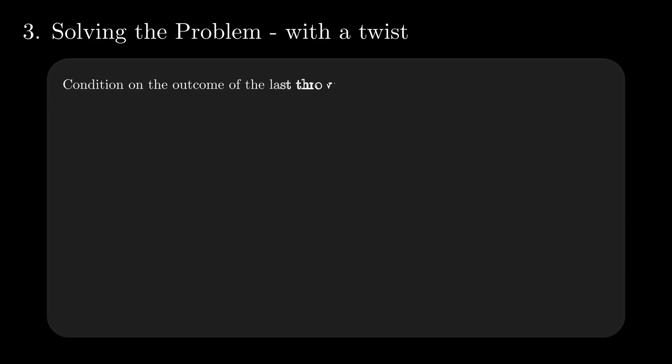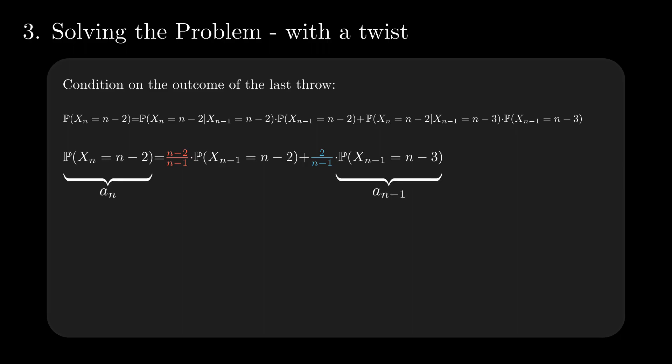Let us condition on the outcome of the last toss and generalize the computations for n tosses and n-2 successes. As before, the first conditional probability requires a miss in the last toss with probability (n-2)/(n-1), and the second one to be a hit. We can denote by a_n the probability that X_n equals n-2. Then the last term contains a_{n-1}.